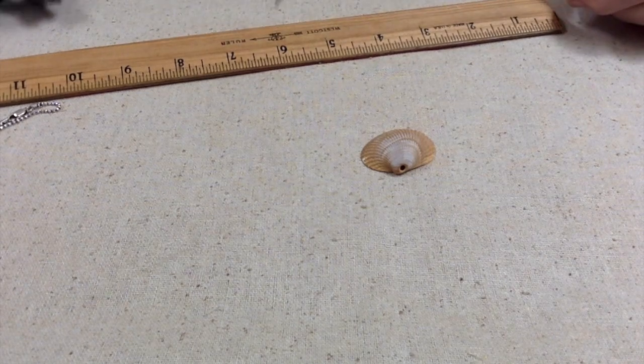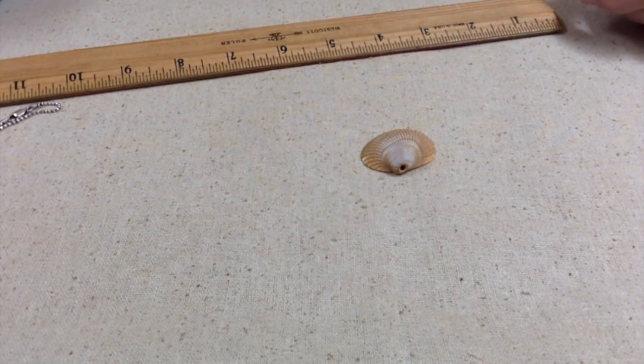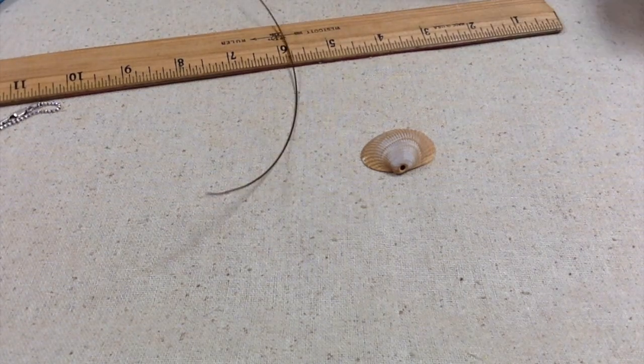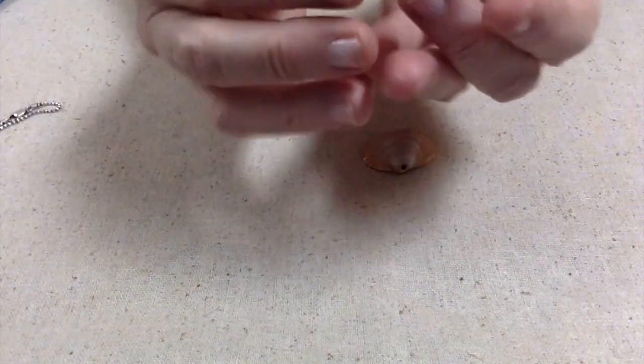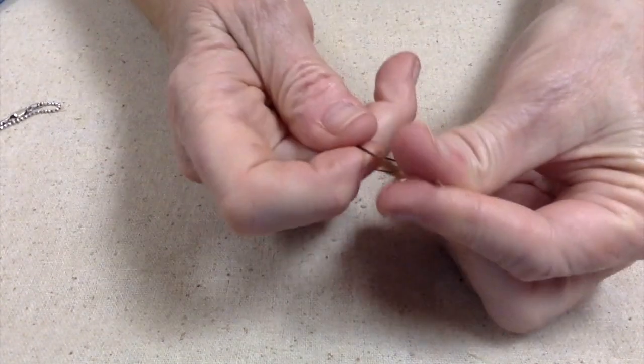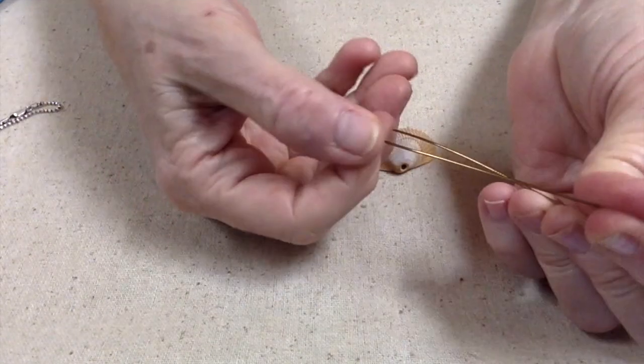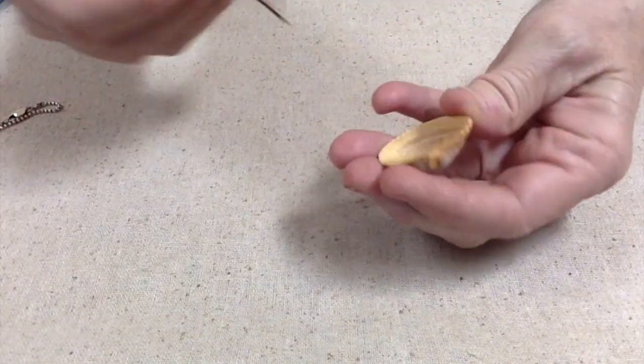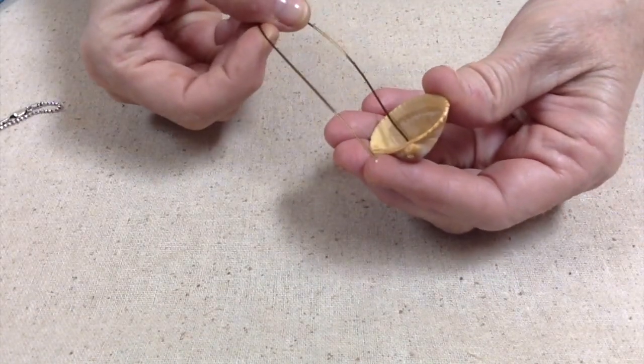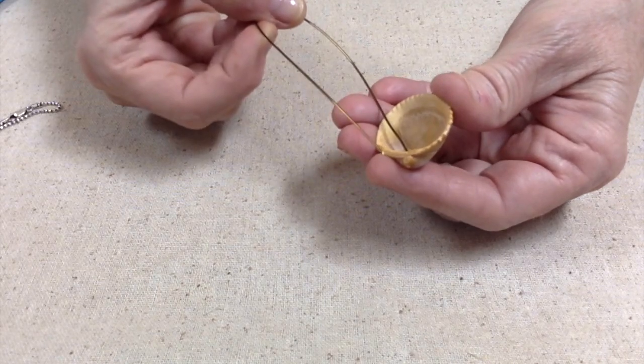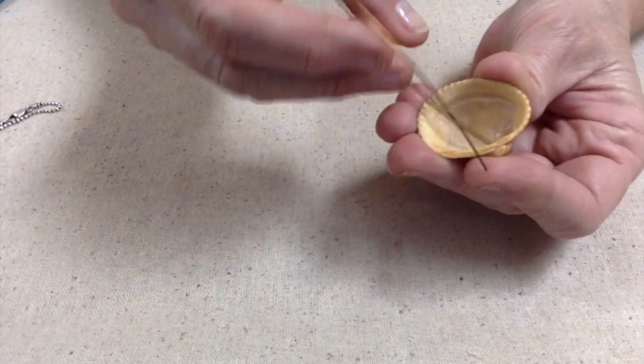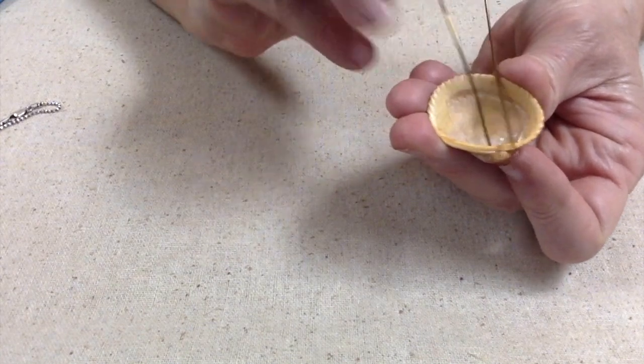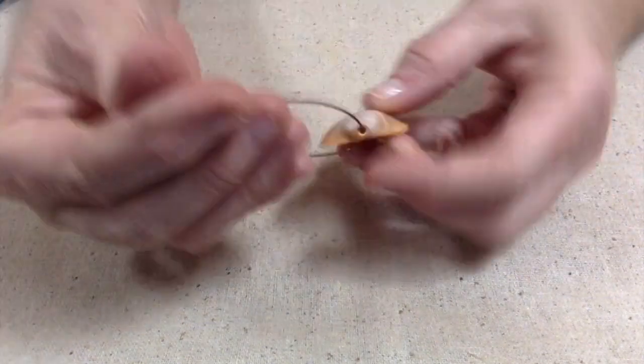I probably need about eight inches. This is not necessarily rocket science, but I got about eight inches of wire here. I'm going to fold it in half and then I'm going to thread it through the hole. I tell you my eyes, I still haven't gotten my new glasses yet. Anyway, you thread it through the hole like that.